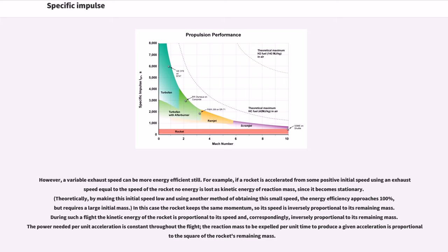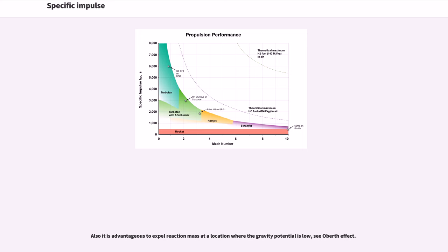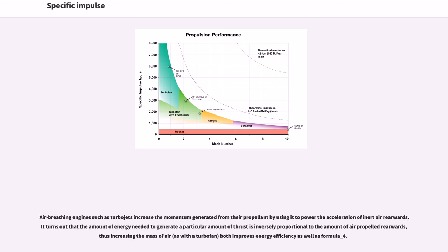A variable exhaust speed can be more energy efficient still. For example, if a rocket is accelerated from some positive initial speed using an exhaust speed equal to the speed of the rocket, no energy is lost as kinetic energy of reaction mass, since it becomes stationary. The rocket keeps the same momentum, so its speed is inversely proportional to its remaining mass. The power needed per unit acceleration is constant throughout the flight, and the reaction mass expelled per unit time to produce a given acceleration is proportional to the square of the rocket's remaining mass. It is also advantageous to expel reaction mass where the gravitational potential is low — see the Oberth effect. Air-breathing engines increase the momentum generated from their propellant by using it to power the acceleration of inert air rearwards, improving both energy efficiency and specific impulse.